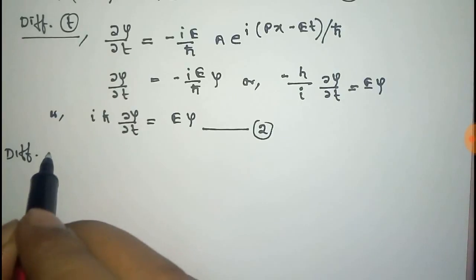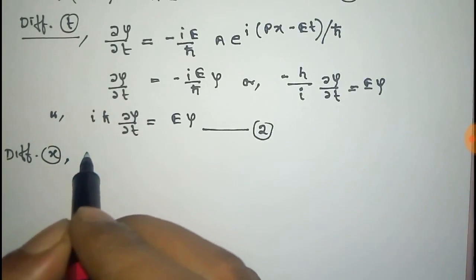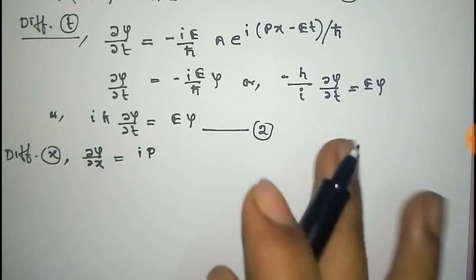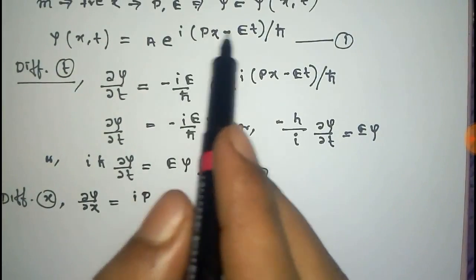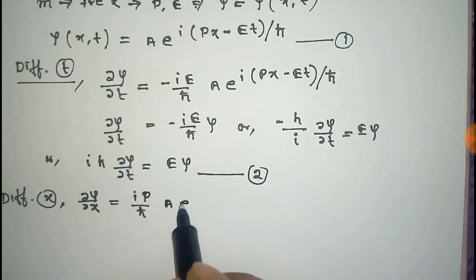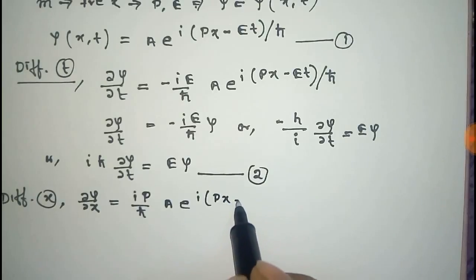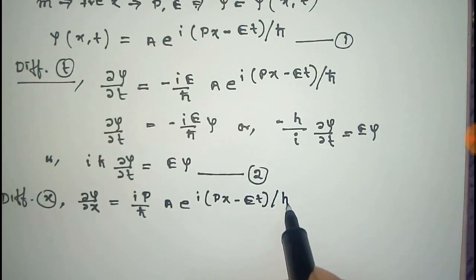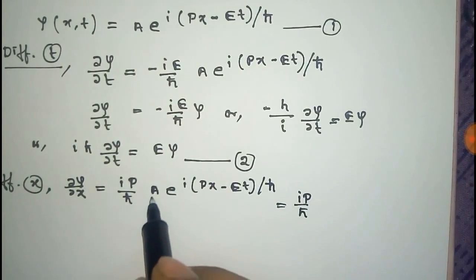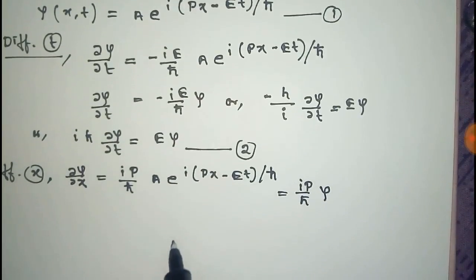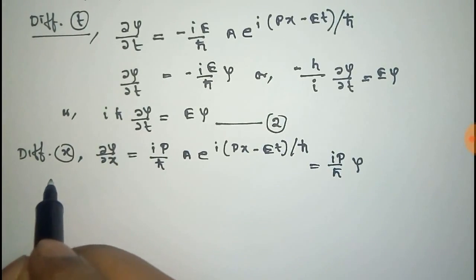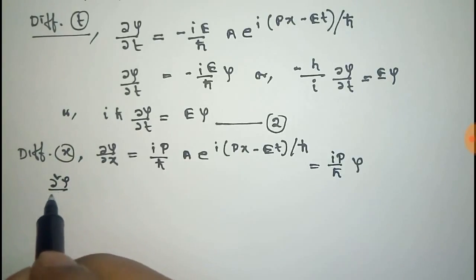Now differentiating equation one partially with respect to x, we get: ∂ψ/∂x = (ip/ℏ) · A·e^(i(px − Et)/ℏ), which is equal to (ip/ℏ) · ψ. Now differentiating this one more time with respect to x, we get ∂²ψ/∂x².